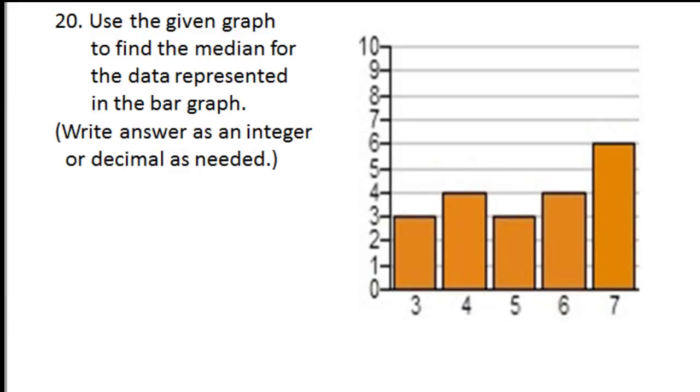Use the given graph to find the median for the data represented in the bar graph. Write the answer as an integer or a decimal as needed. With median, we're with the middle value. Again, you should be able to do this without much effort going straight from the bar graph. But if not, you can reinterpret things.